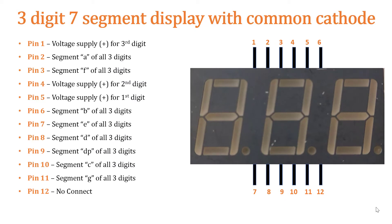Pin 1 is the voltage supply which is 5 volts for the third digit, which is the leftmost digit in this module. Pin 2 is for providing the ground terminal or cathode to segment A of all three digits — this one, this one, and this one is segment A. Then pin 3 is to provide the ground for segment F of all digits — this is segment F, this is segment F, and this is segment F.